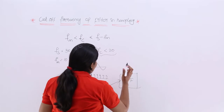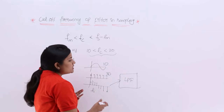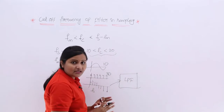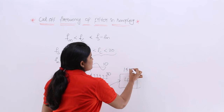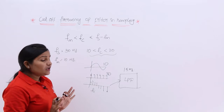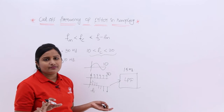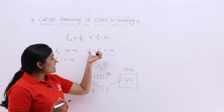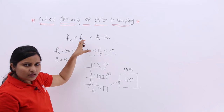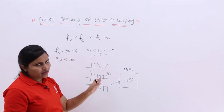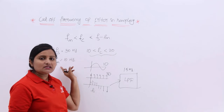For example, this signal has 10 Hz and the sampling frequency has 30 Hz, so the higher frequency components may also be present. If you are passing through an LPF, the cutoff frequency must be in the range of 10 to 20 Hz — you can take 15 Hz. If you consider less than 10 Hz, all the message components are going to be eliminated, because the message frequency starts from 10 Hz, so you will miss message components.